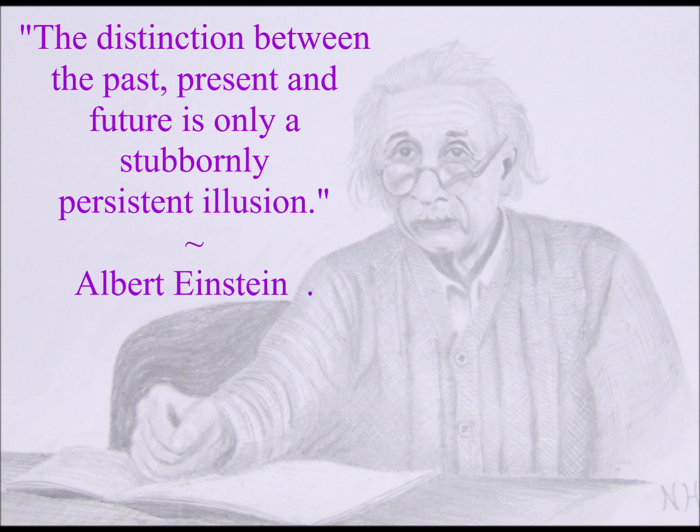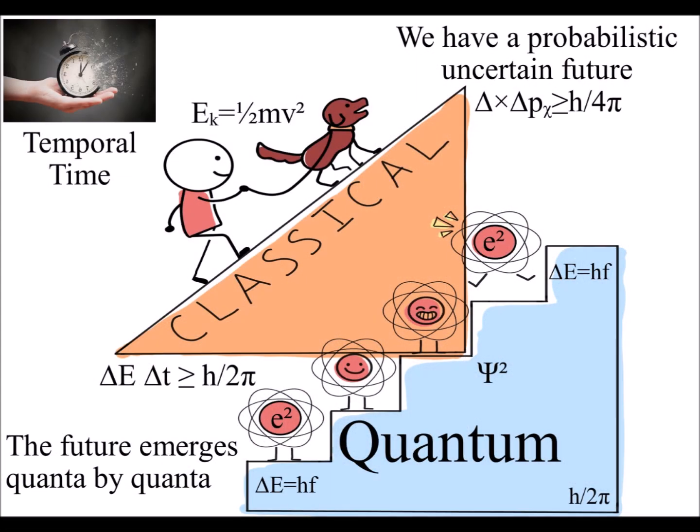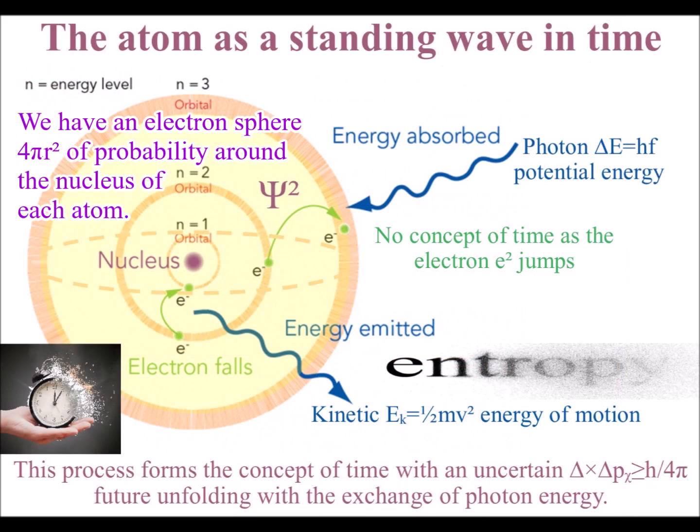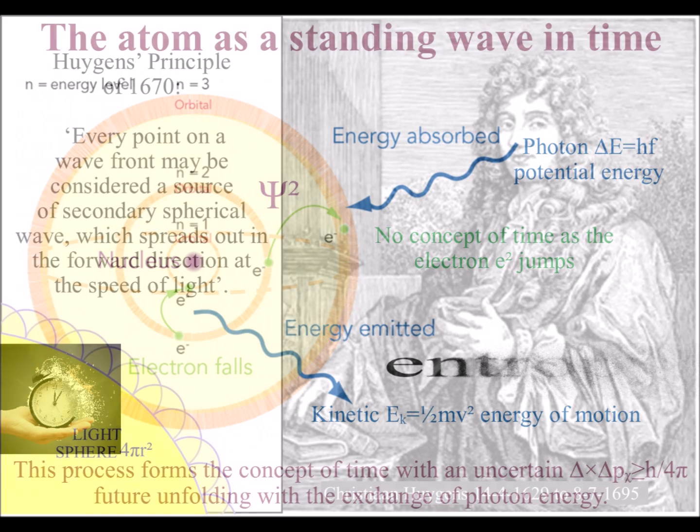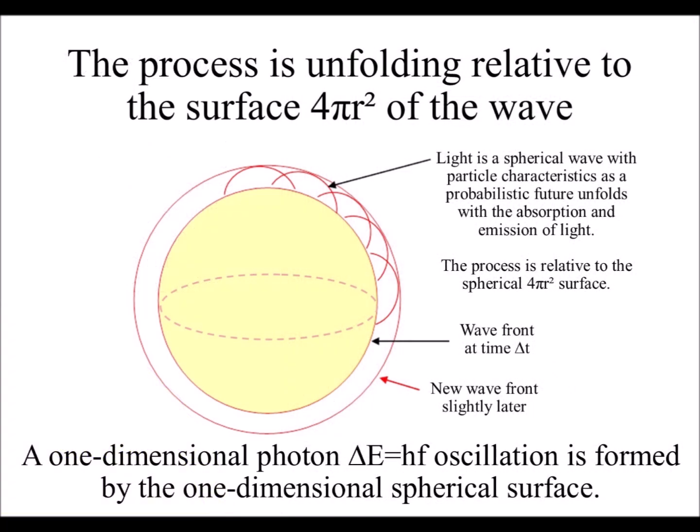These videos take a different approach and explain the mathematics of quantum mechanics as the physics of time as a geometrical process of energy exchange. To do this, we need to go back to the spherical geometry of Huygens' Principle of 1670, that says every point on a light wavefront has the potential for a new spherical light wave.